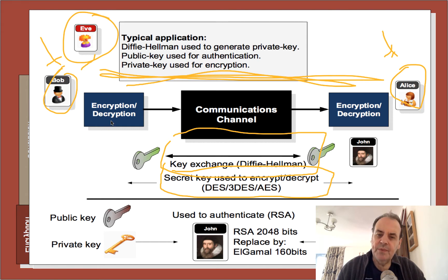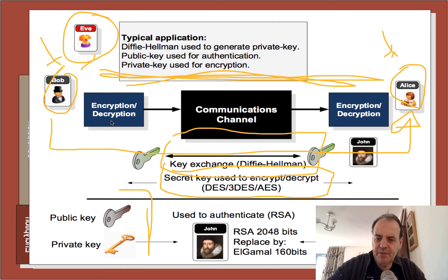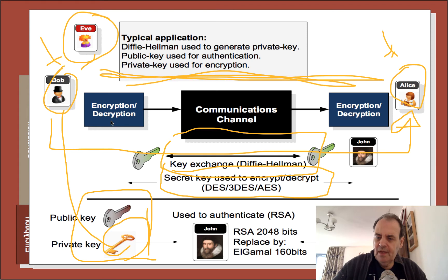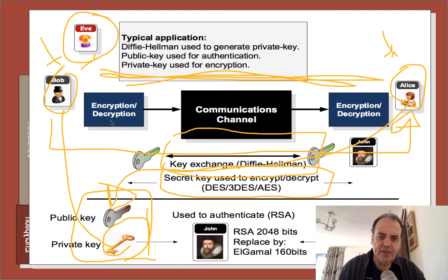We need some way to authenticate or identify Bob to Alice and vice versa, and also for Alice to know that messages haven't been changed. For this we have public key encryption. With public key encryption we use a key pair — a public key and a private key. Bob signs something with his private key and sends a signature to Alice, who then proves Bob's identity with the public key. This is used fairly extensively within the PKI, or public key infrastructure, and also in cryptocurrencies and blockchain.